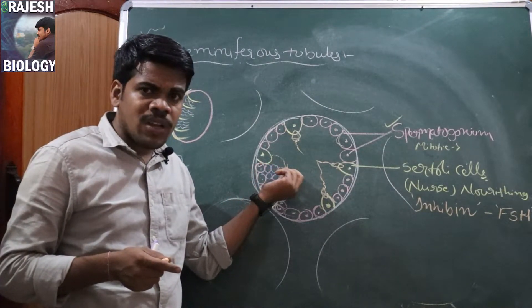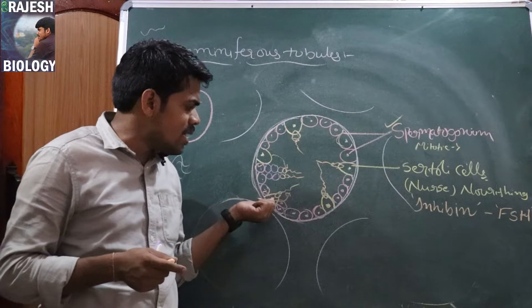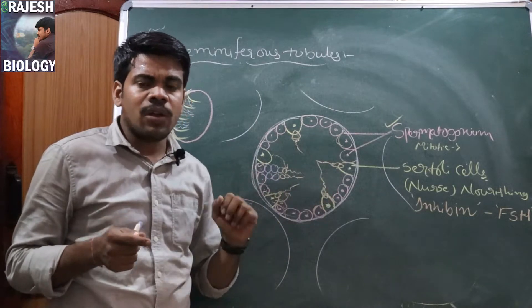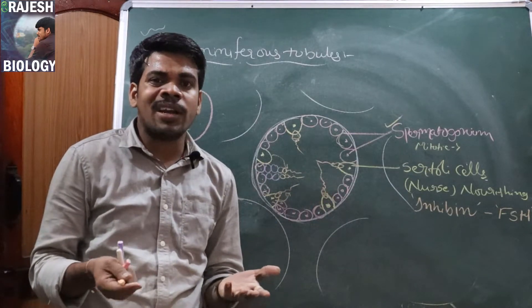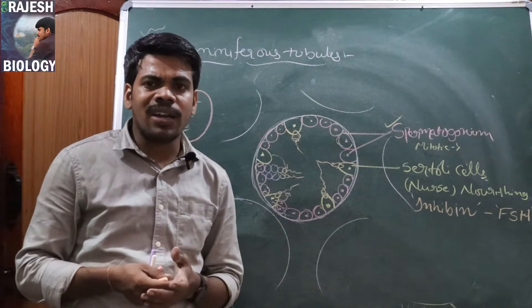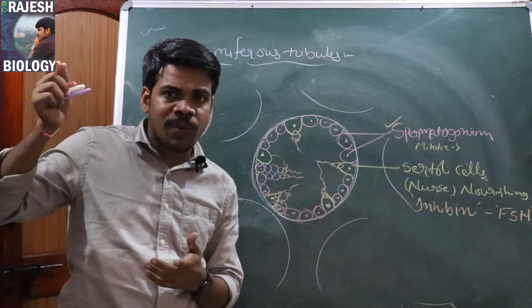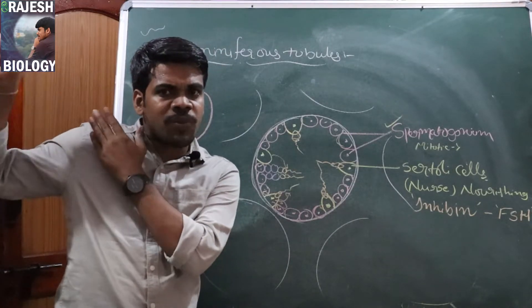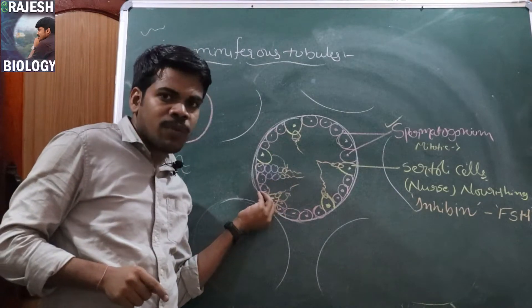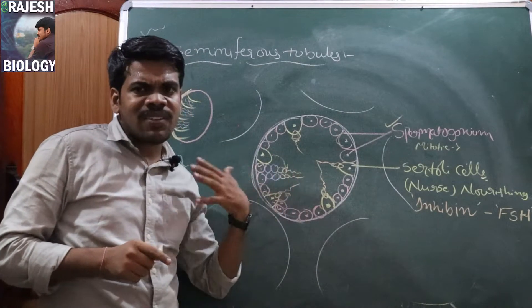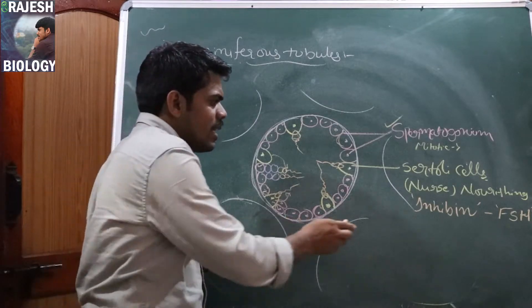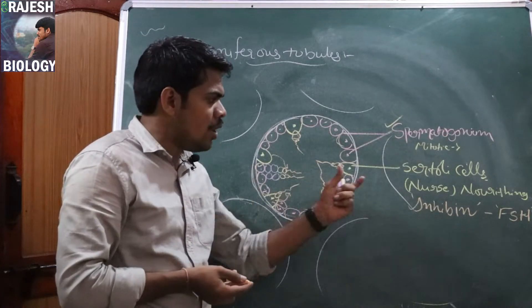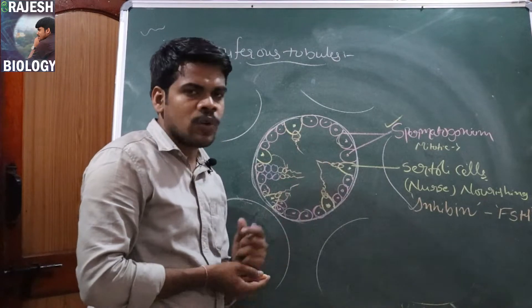Once sperm cells are embedded in Sertoli cells, the Sertoli cells receive information from the sperm cell — that they are taking nourishment, and FSH is still being released from the pituitary gland unnecessarily. So the Sertoli cells release the hormone Inhibin to stop the secretion of FSH — Follicle Stimulating Hormone. This is the function of Sertoli cells.